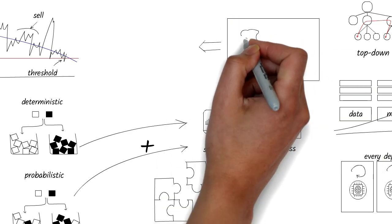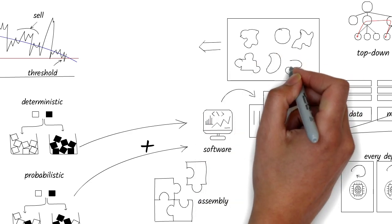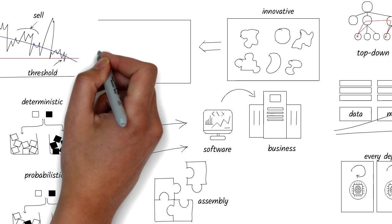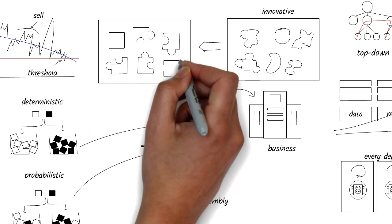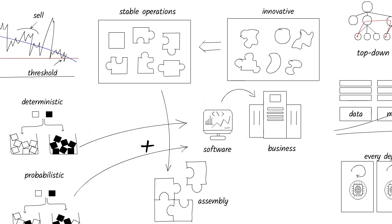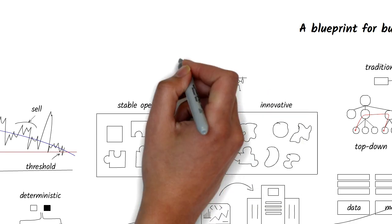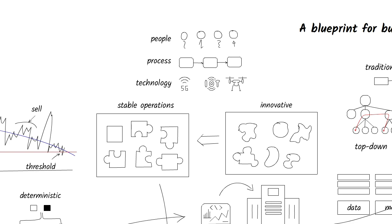This brings us to the innovation capability equation. On one hand, we should build stable components that can be assembled. On the other, we should explore new components to increase the library of stable components. Ironically, the larger the library of stable components, the more innovative the company will become because it can combine these components in many more ways for business value. Organize your enterprise as part innovation and part stable operations — the innovation feeds the operations. People, skills, processes, and technology for each of these parts will be different.